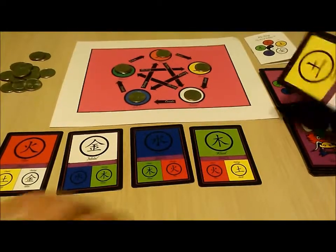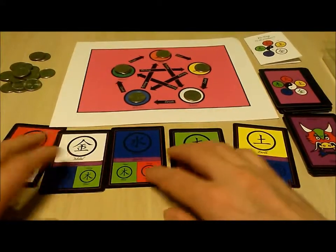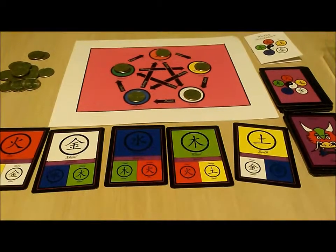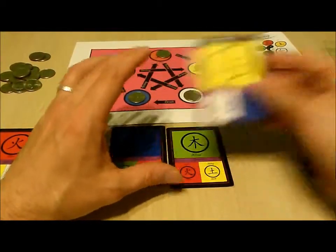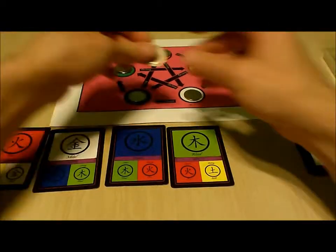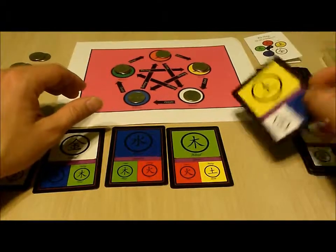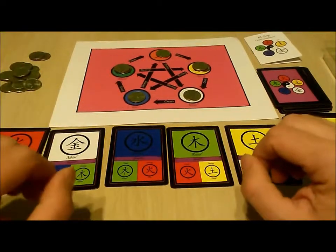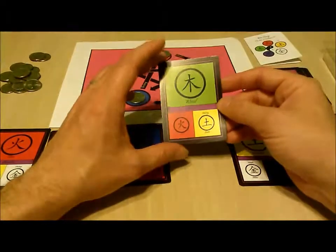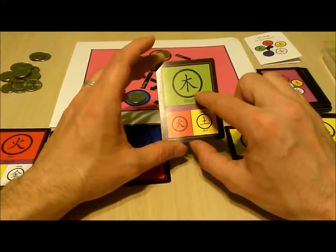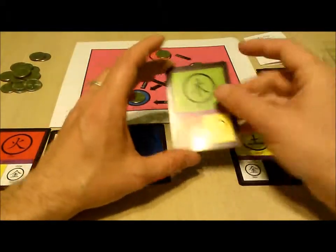We now draw another card and looking at what we have we will now play an earth card to place the token on the earth space. We draw another card and now we play a wood card, this time spending a wood token to destroy an earth token.